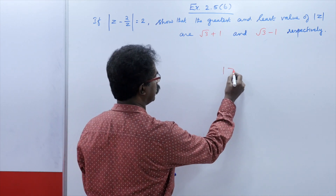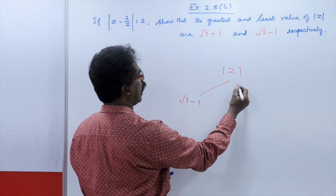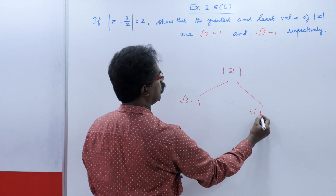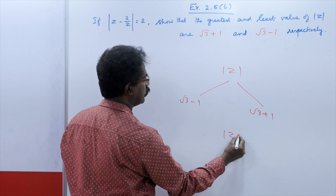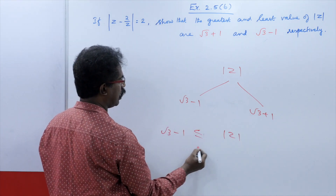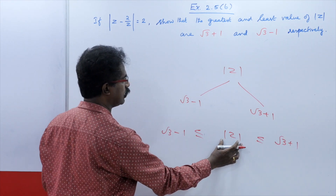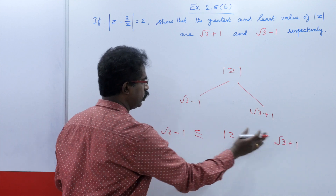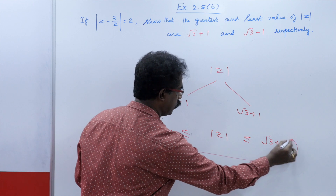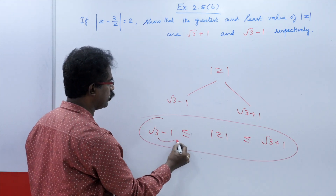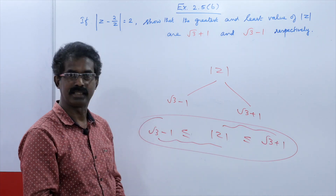So modulus z has a least value of root 3 minus 1 and its greatest value is root 3 plus 1. We have to get an inequality like this: root 3 minus 1 less than or equal to modulus z less than or equal to root 3 plus 1. So modulus z lies between these two — this is the least value and this is the greatest value. This is what we have to prove. For that we prove two cases separately, and combining them we will get this result.